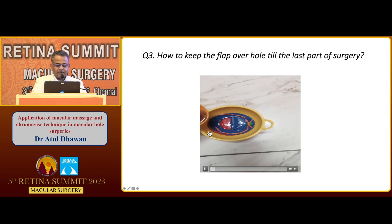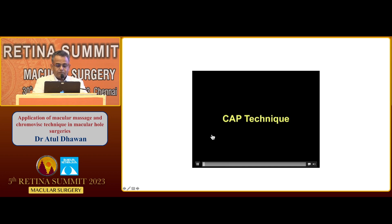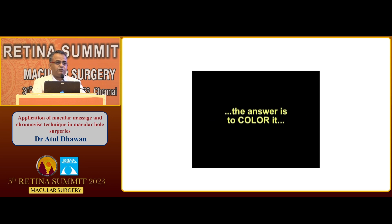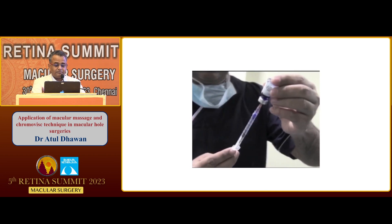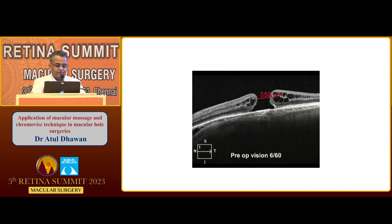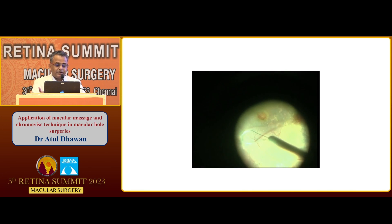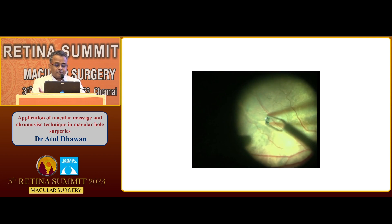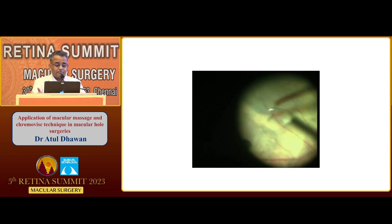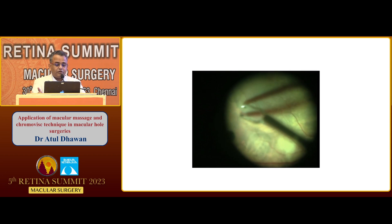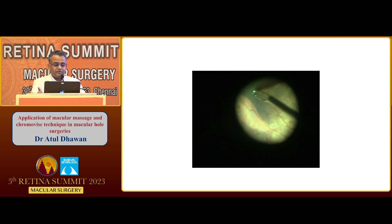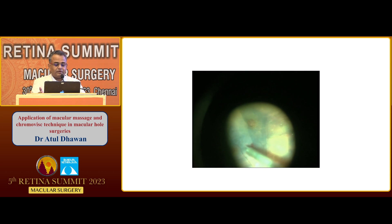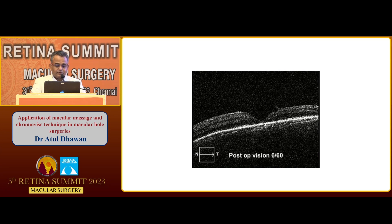Now we'll take a real video. CAP is the colored visco-assisted ILM flap technique. We color the visco with one drop of brilliant blue — the same brilliant blue used in macular hole surgery. This is a 180-degree ILM flap for a 550-micron hole. Just make the flap with an initial cut using a finesse loop, start peeling from one side, be very gentle, place the flap over the hole, and support this flap with the temporary colored viscoelastic. Later on, you can take out all the viscoelastic because of its blue color. U-shape closure is achieved.